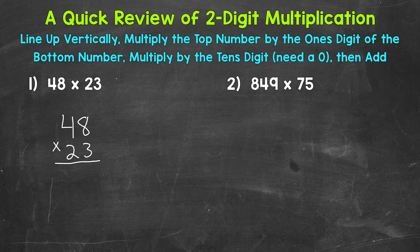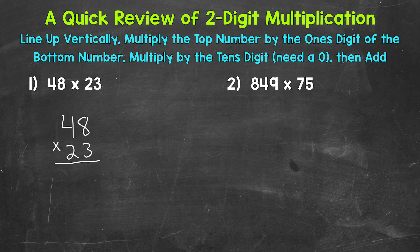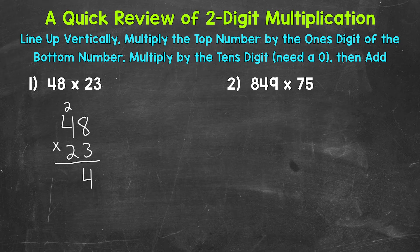Once we have that rewritten vertically, we need to multiply the top number by the ones digit of the bottom number. The ones digit of 23 is three, so we need to do three times eight and then three times four. We can forget about the two in 23 right now — we're just worried about the ones place. Starting with three times eight, which is 24, we write our four and carry the two. Then we take that three and multiply it by the four in 48, moving to the tens place of the top number.